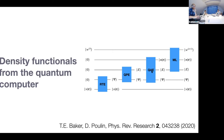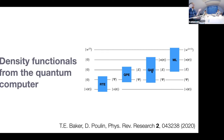We're starting from a wave function, applying an operator, and counting the number of times we recover that same wave function — so David always called it quantum counting. When I write it in papers I say 'state-preserving quantum counting,' and it's exactly an implementation of the quantum metropolis sampling — the QMA sampling.